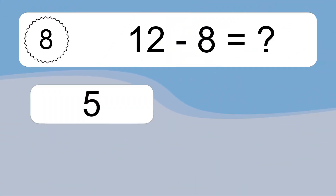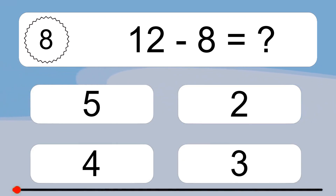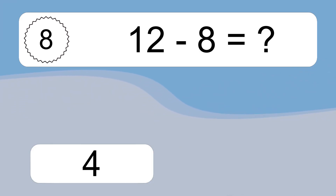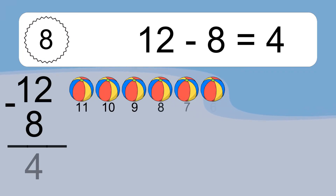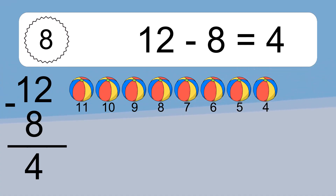12 minus 8 equals what? 12 minus 8 equals 4. Let's count it: 11, 10, 9, 8, 7, 6, 5, 4.